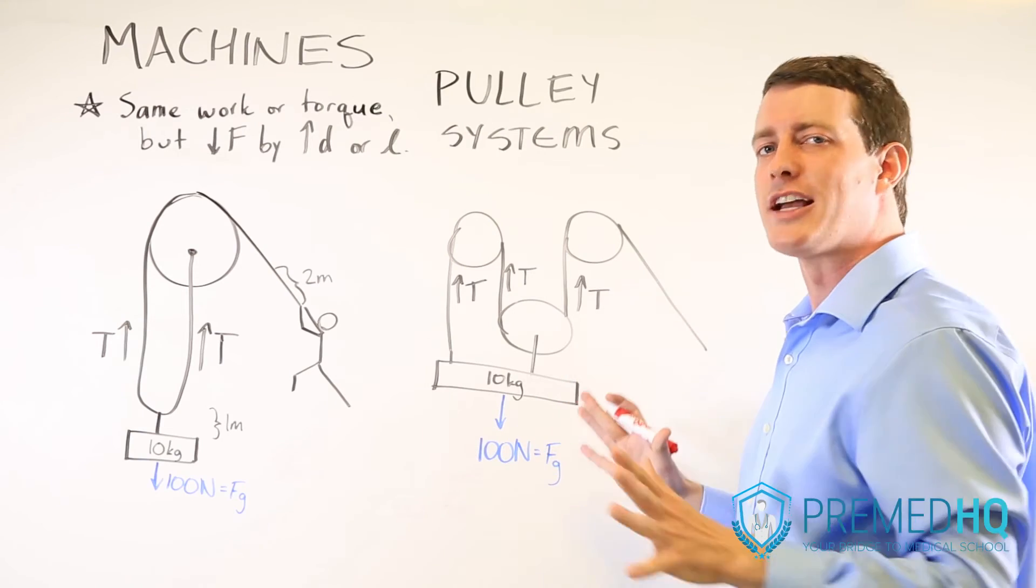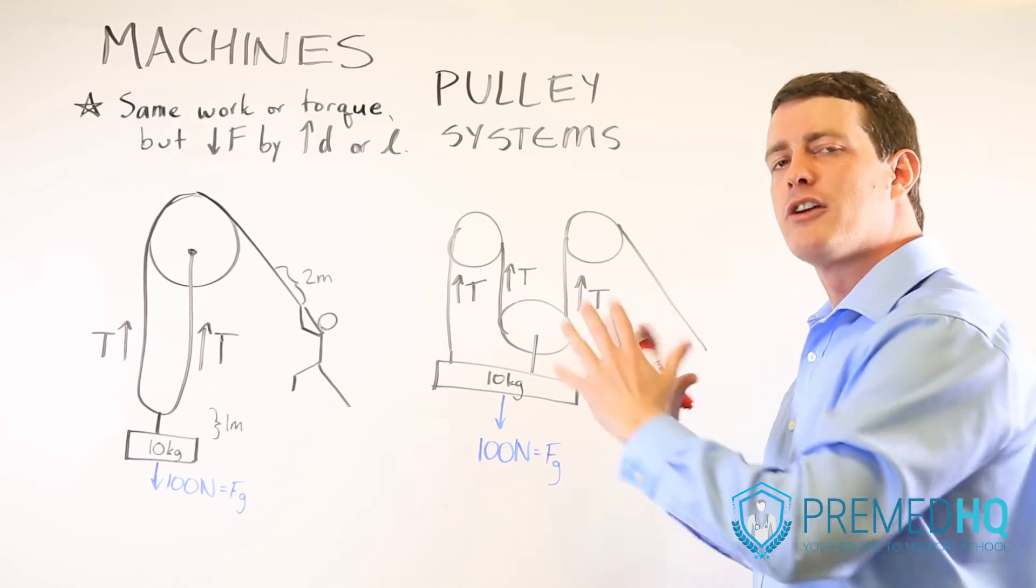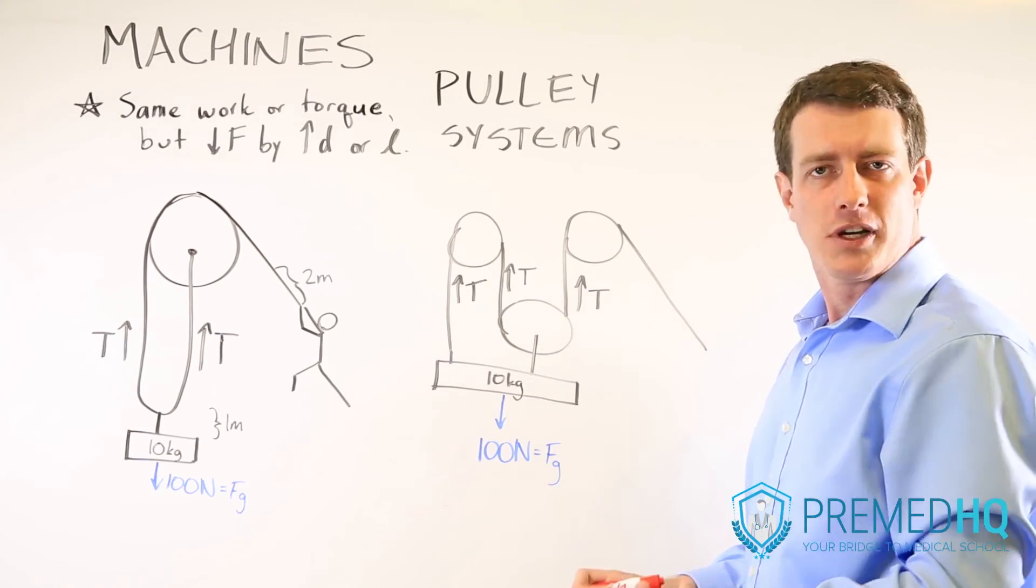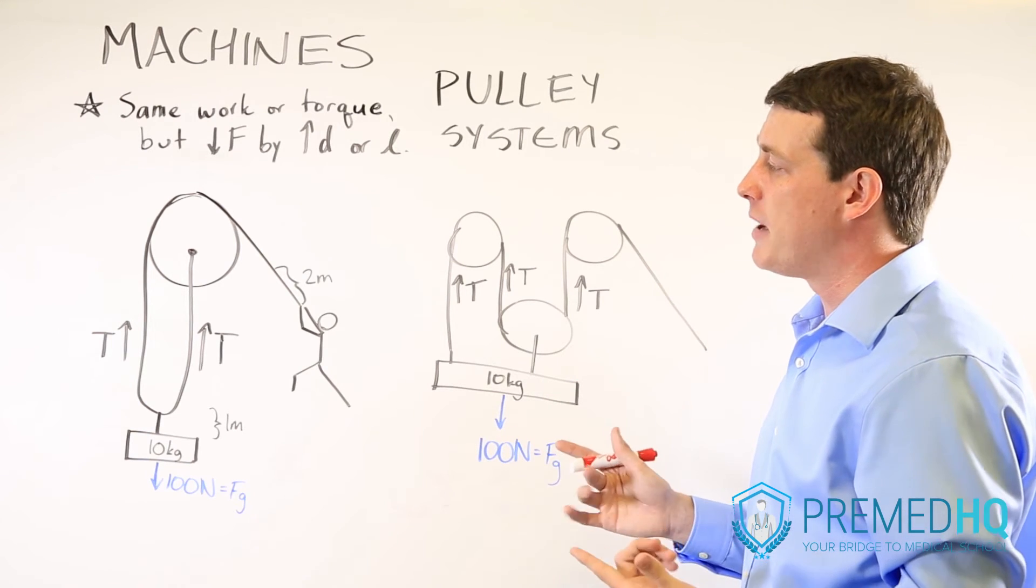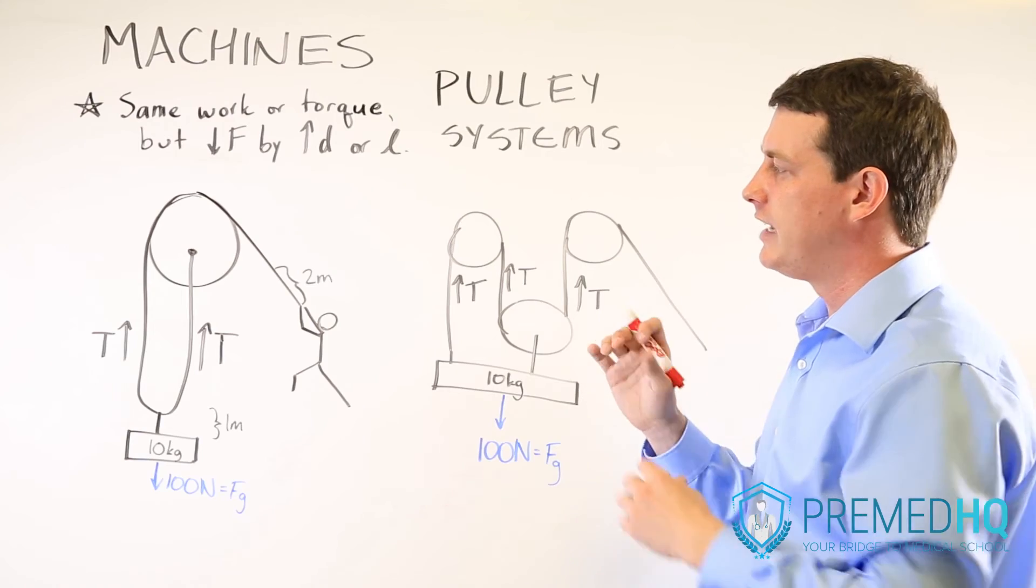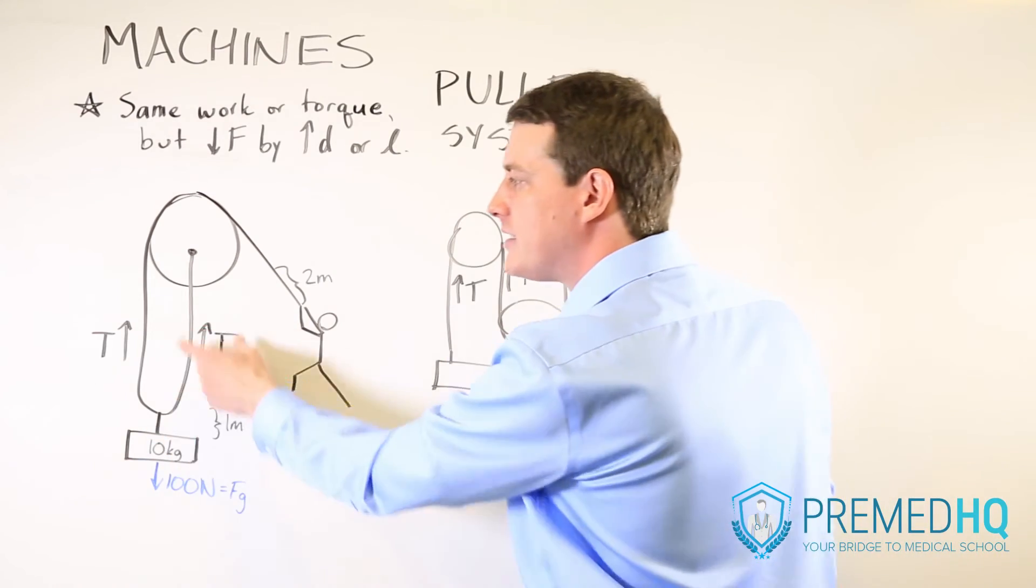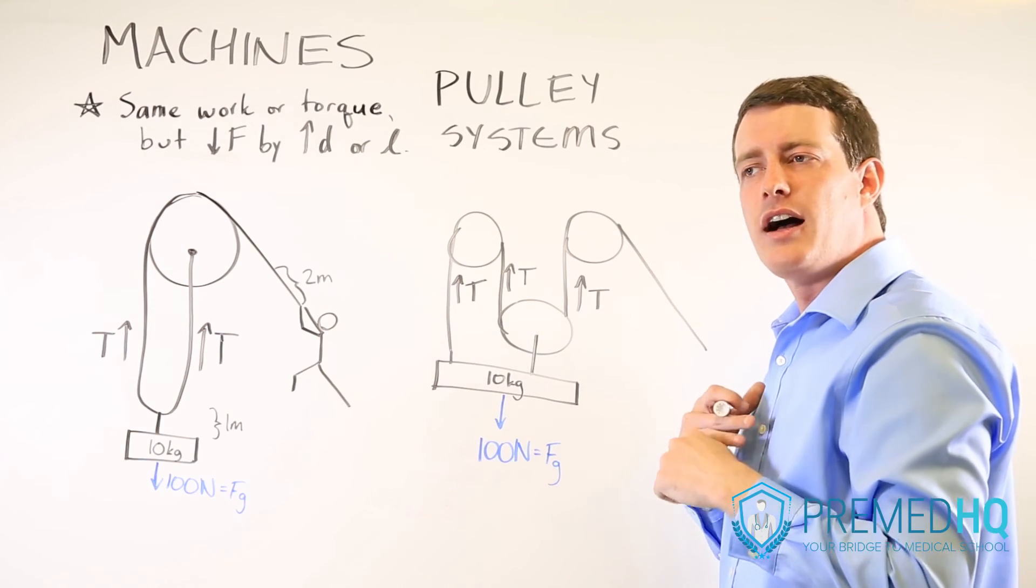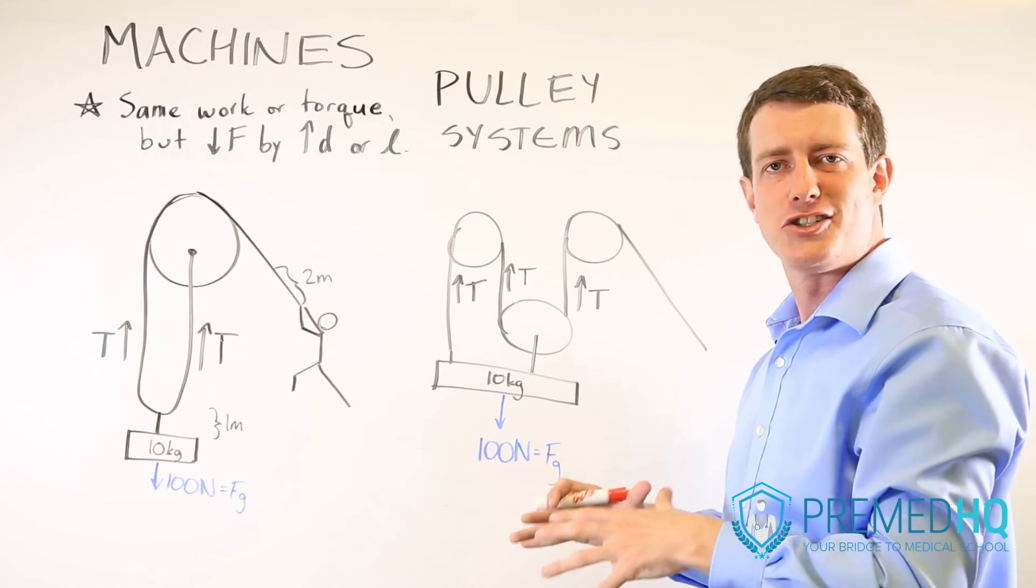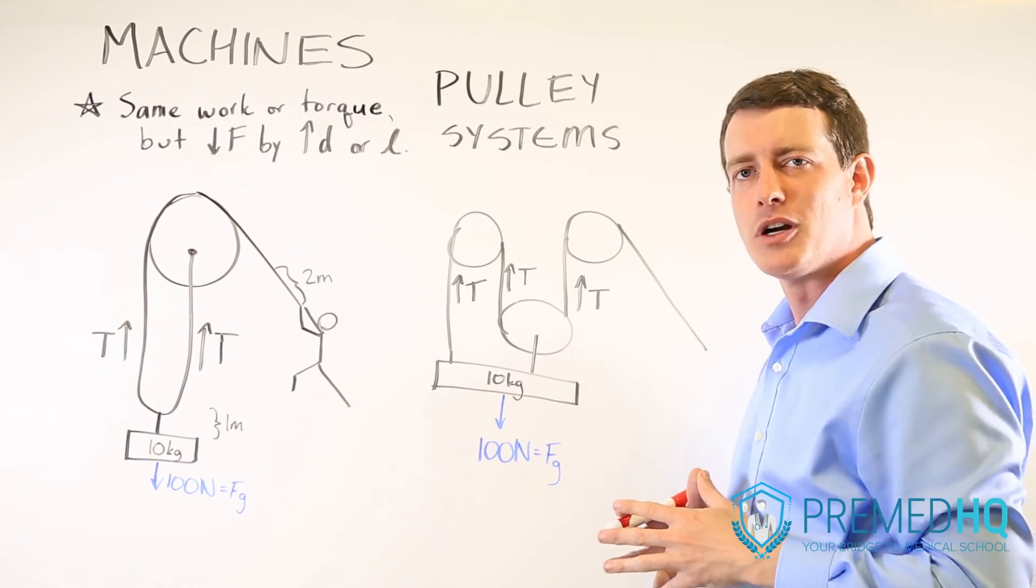And so pulley systems operate like all other machines. You increase the distance to decrease the amount of force necessary, and you get a mechanical advantage based upon the fact that if you have one tension force but the tension is operating in two different areas, that will allow you to reduce the amount of tension necessary in order to perform that work.